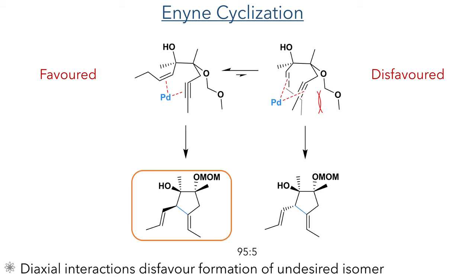The hydride complex then reductively eliminates to regenerate the palladium(II) species and produce the product. This reaction was quite stereoselective, producing the desired target in a 95 to 5 ratio. We can explain this by looking at the reacting conformations: in one conformation there are 1,3-diaxial interactions between the butenyl group and the MOM group, which is a destabilizing effect, and thus favors the other conformation which leads to the intended product.